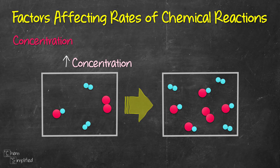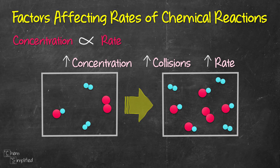That means the chances of the two types of reactants colliding with each other are going to increase, and that translates to an increased rate of reaction. So the relationship between concentration and rate is directly proportional — if we increase the concentration of the reactants, the rate will increase; if we decrease the concentration, the rate will decrease as well.